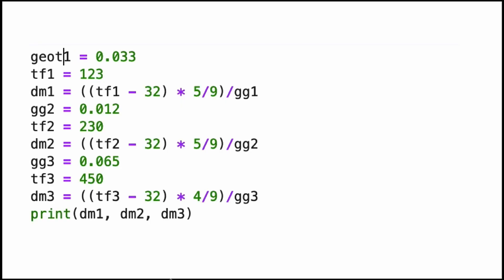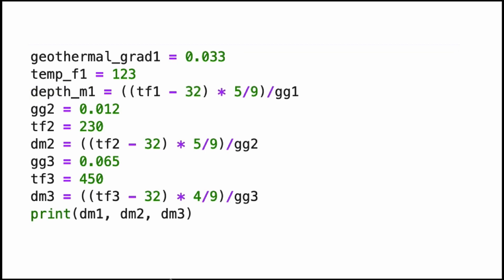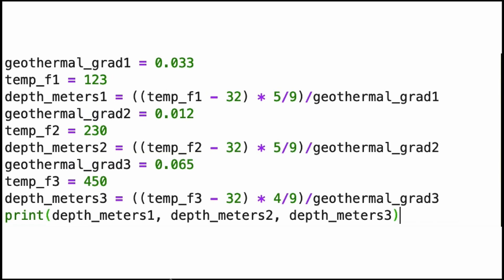I'm going to start by renaming the variables. The first variable is actually a geothermal gradient, so I call it geothermal_gradient. The second variable is a temperature, so I call it temp, and it's in Fahrenheit so I keep the F. Finally, the third is depth in meters. You can see that by giving the variables a meaningful name, all of a sudden the code becomes much more understandable. If I replace all the variable names I obtain something like this — it's more verbose and longer, but hopefully easier to understand.